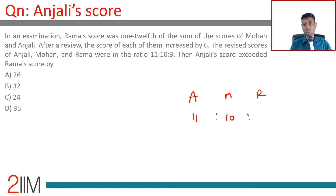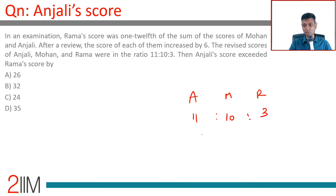Whenever a ratio is given, a simple idea is to start your variable from that point. So let's say their scores after review were 11x, 10x, and 3x. Each of them got 6 more, so...